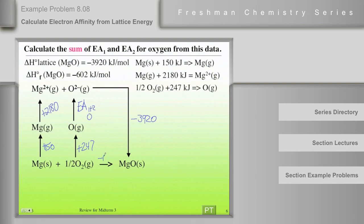And down here we have negative 602. So negative 602 is equal to positive 150 plus 2180 plus 247 plus EA1 plus 2, we're going to solve for, minus 3920. I didn't solve that, but if you solve that for this unknown, you should get the sum of those two electron affinities.